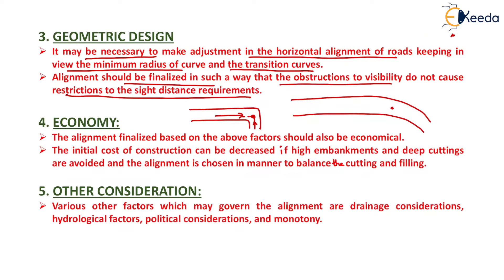The next factor is economy. The alignment finalized based on the above factors should also be economical, keeping the construction cost to a minimum. The initial cost of construction can be decreased if high embankments and deep cuttings are avoided, and the alignment is chosen in a manner to balance the cutting and filling — meaning the volume of filling and volume of cutting should be approximately equal.